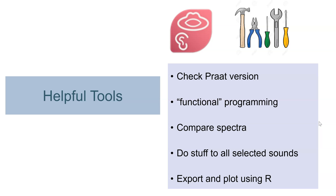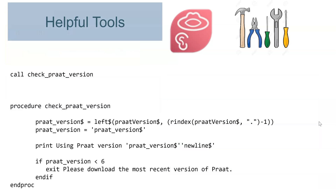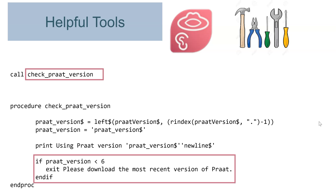And now we transition from good practices to actually helpful tools for you to use. There are many different tools out there, but I'll just show you a few to give a taste of what's available. I encourage you to visit these websites to download the scripts shown on the screen. First, check that the user is running your script on a recent version of Praat — this little bit of code tells them to update if they're not up to version 6.